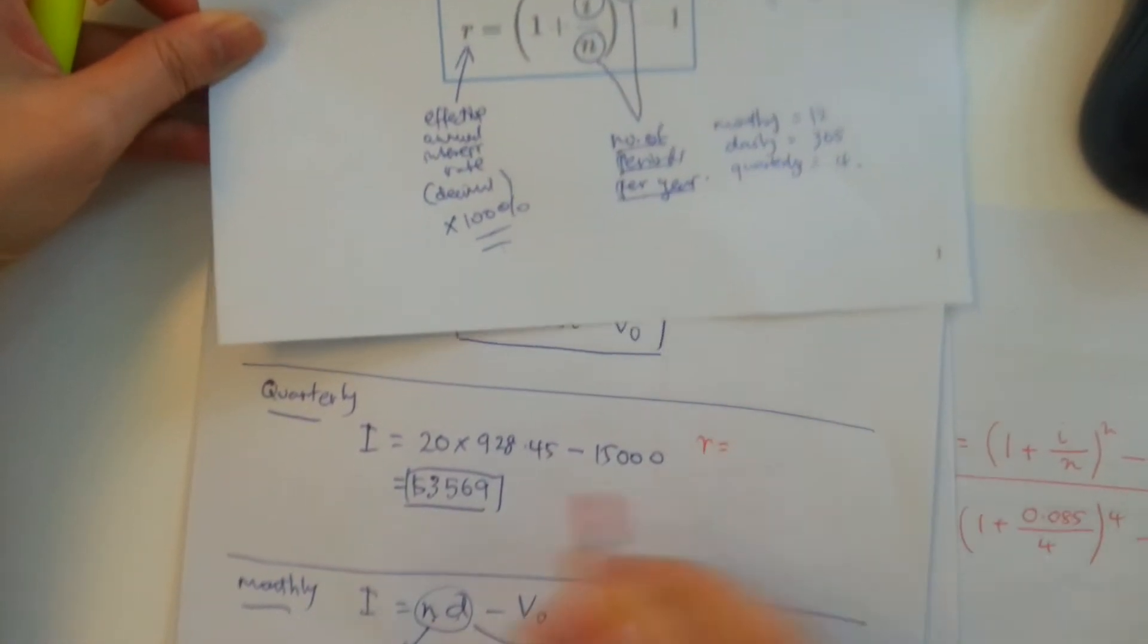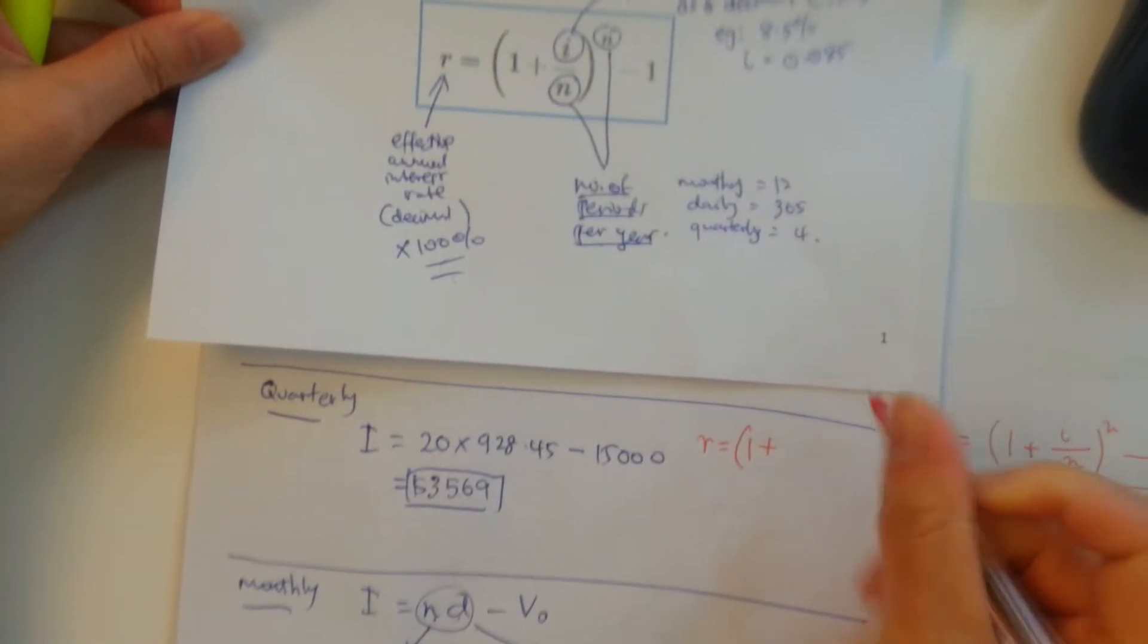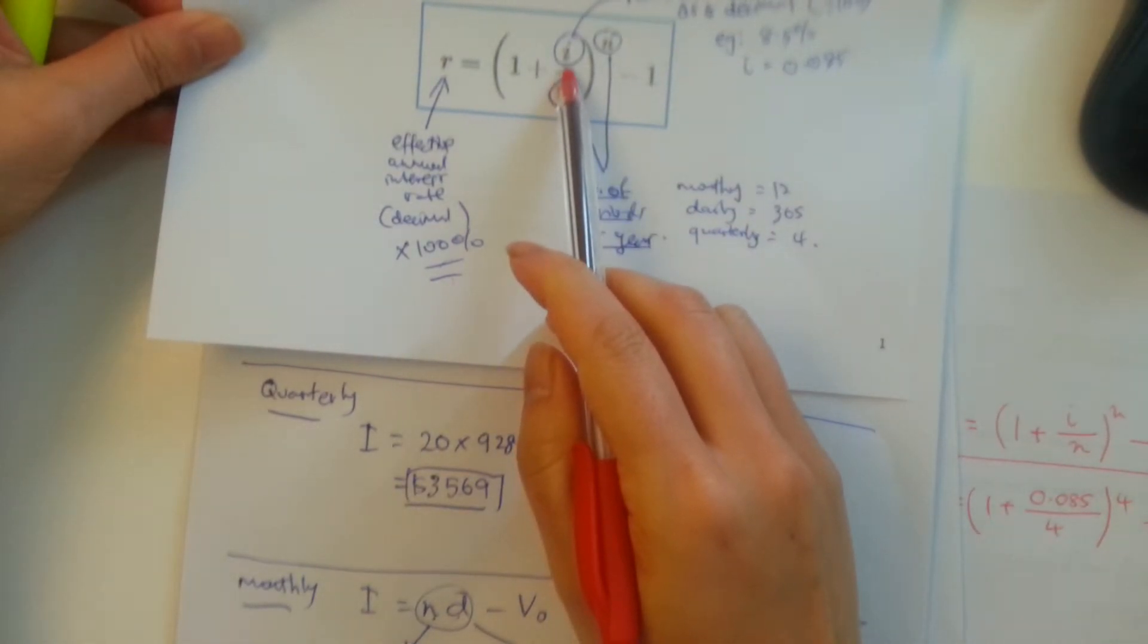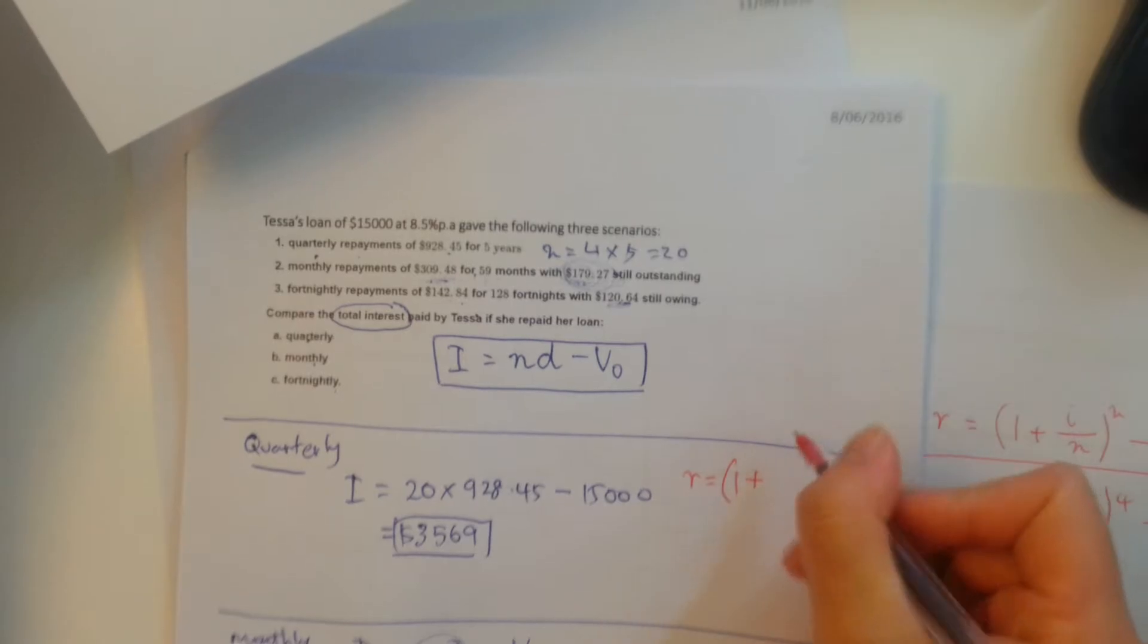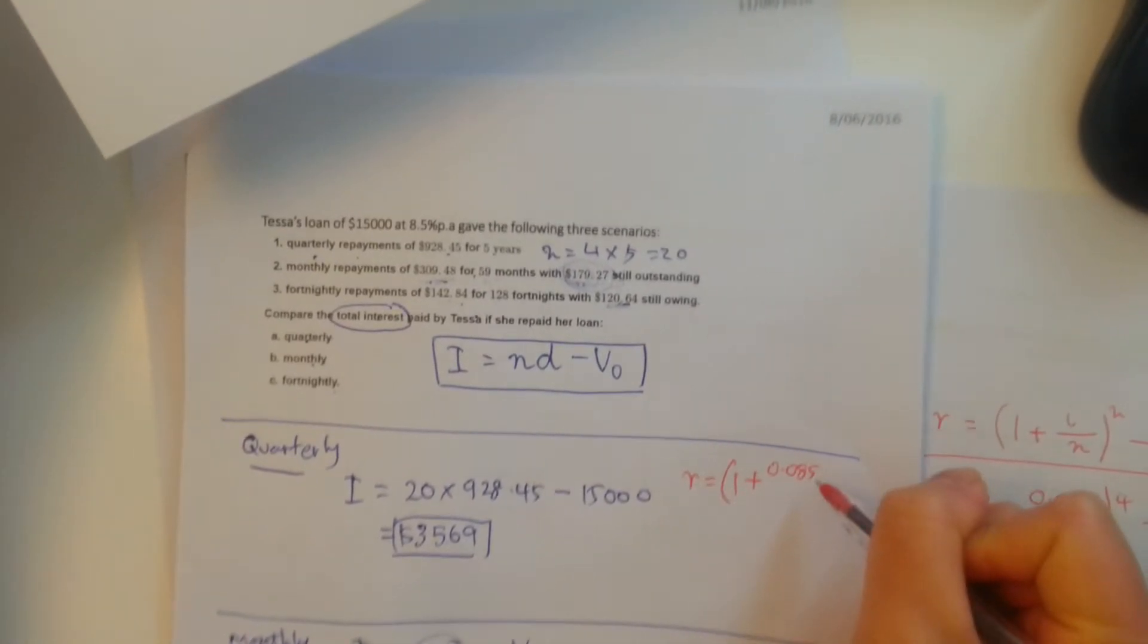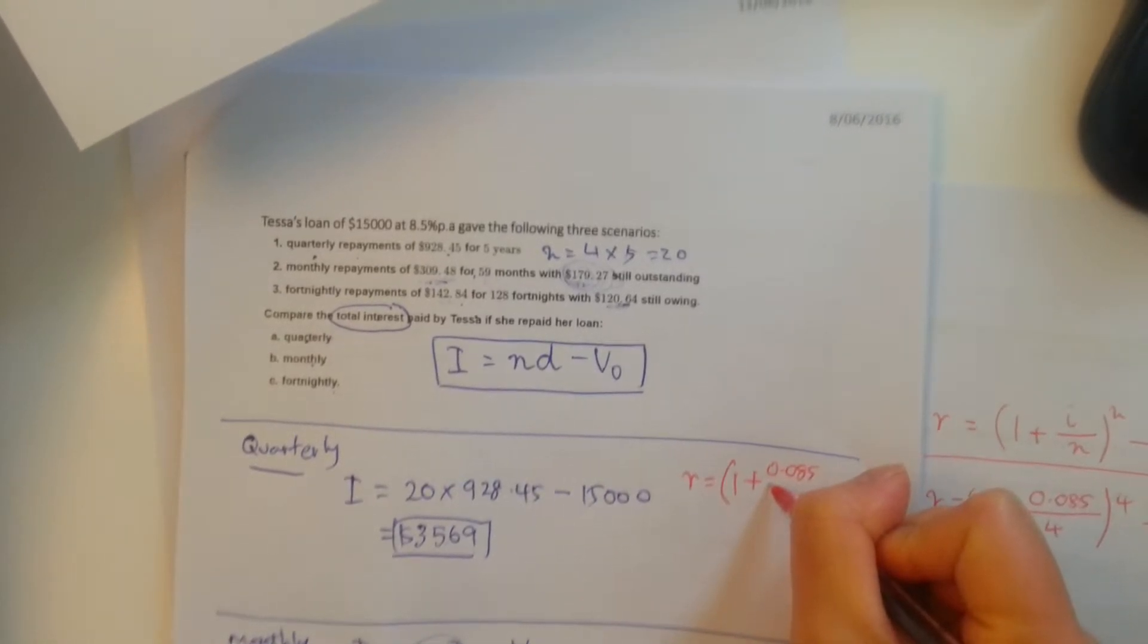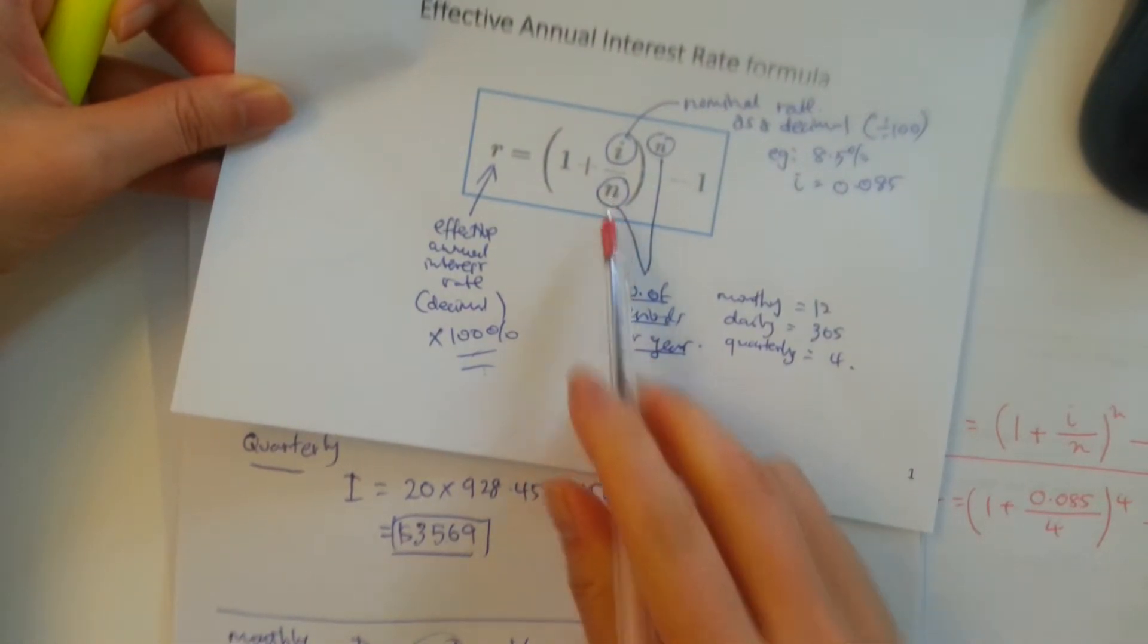So R, the effective annual interest rate under this condition would be 1 plus the I, which is the nominal rate in decimal, the nominal rate in this case is 8.5%, in decimal would be 0.085, remember we divide it by 100 to get the decimal. Then we go divide by N, which is the number of times, number of periods per year,